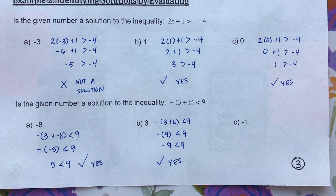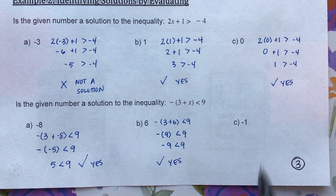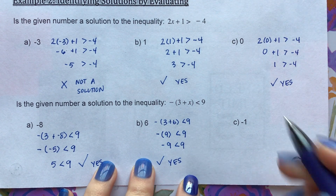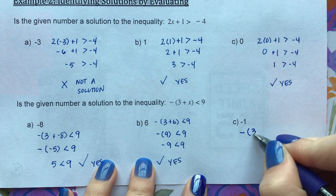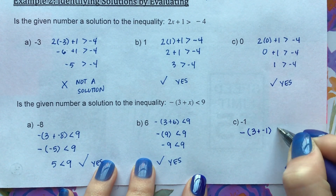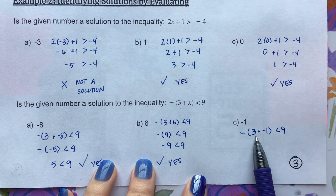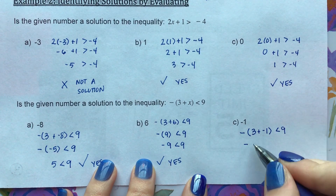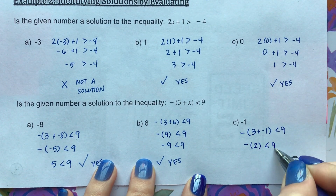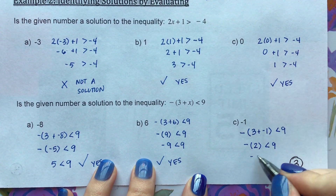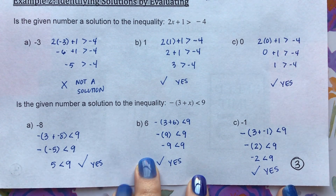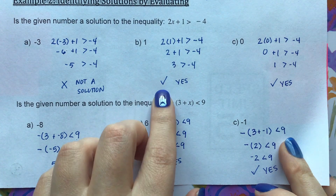One more number to test: c equals negative 1. Substituting in: negative of (3 plus negative 1) is less than 9. Inside the parentheses, 3 plus negative 1 is positive 2, so we have negative 2 is less than 9. That does in fact work, so on this problem all three values — negative 8, 6, and negative 1 — were solutions to the inequality.